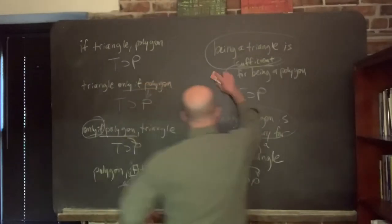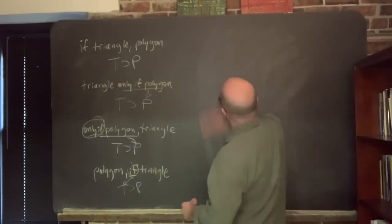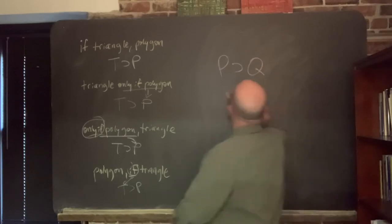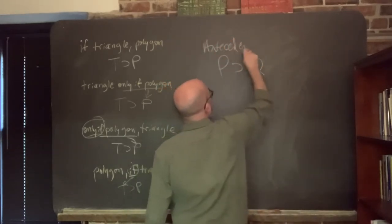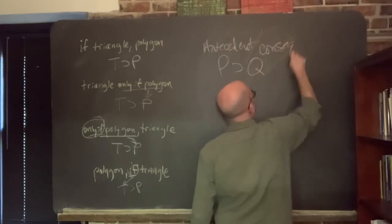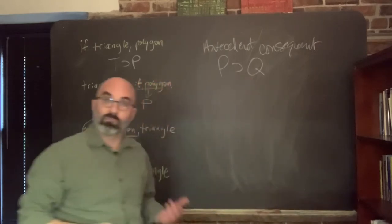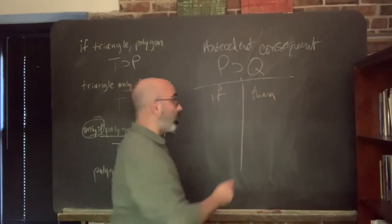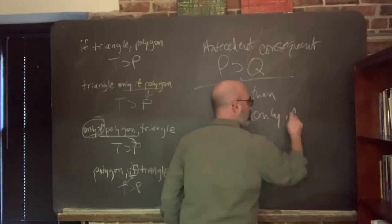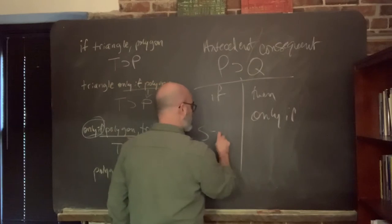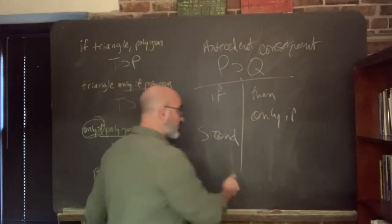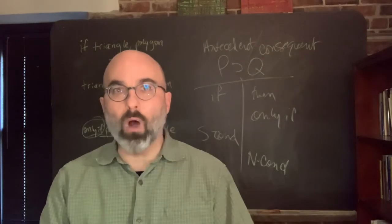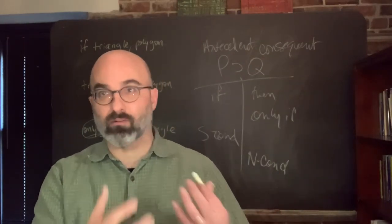That gives us an occasion to represent the anatomy of a conditional. Here's our conditional: P horseshoe Q — there's our antecedent, and here is our consequent. We have ifs and thens, only ifs, sufficient conditions and necessary conditions — many, many different ways to express the conditional relation between those relevant propositions.